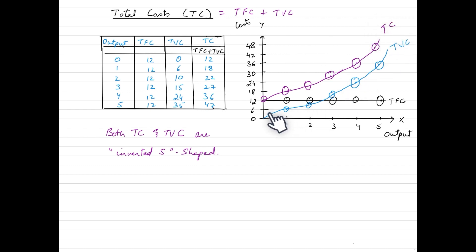Why this curve has this kind of a shape? We call this shape as an inverted S shape and we need to see that both total variable cost curve and total cost curve has an inverted S shape.